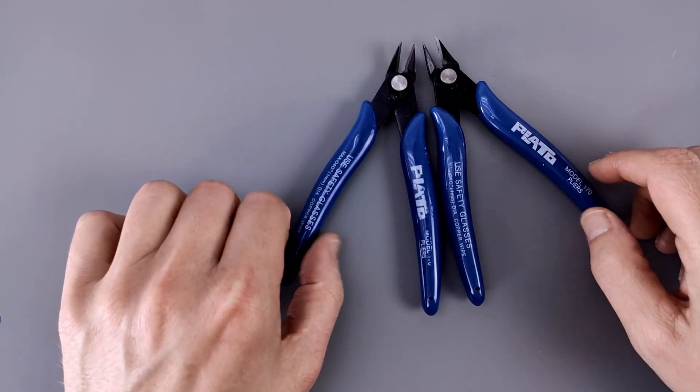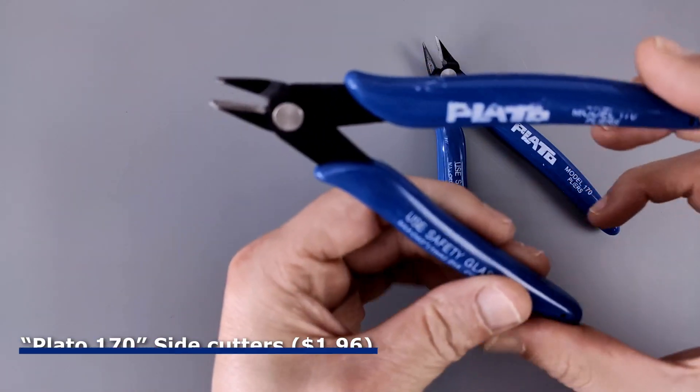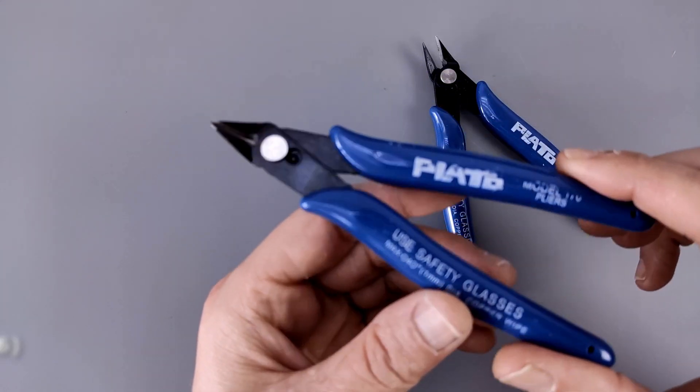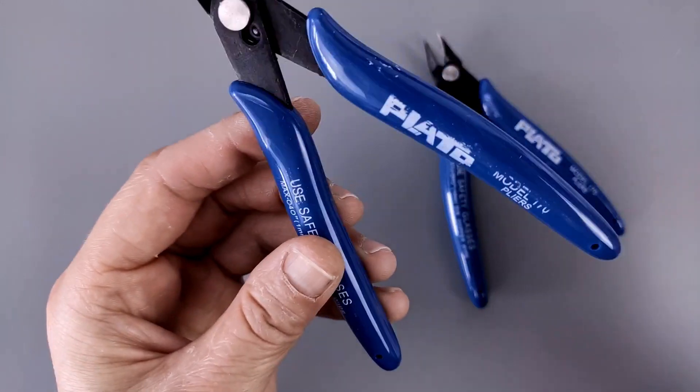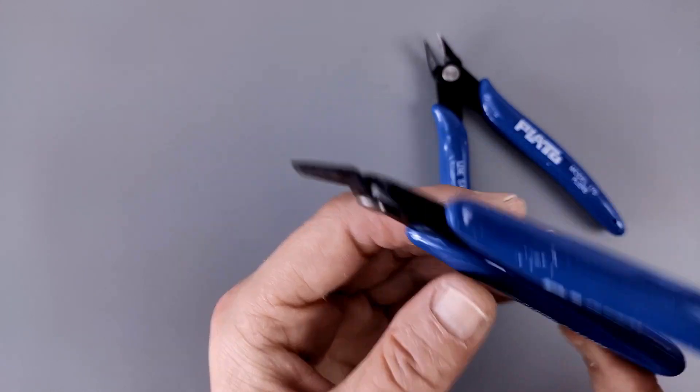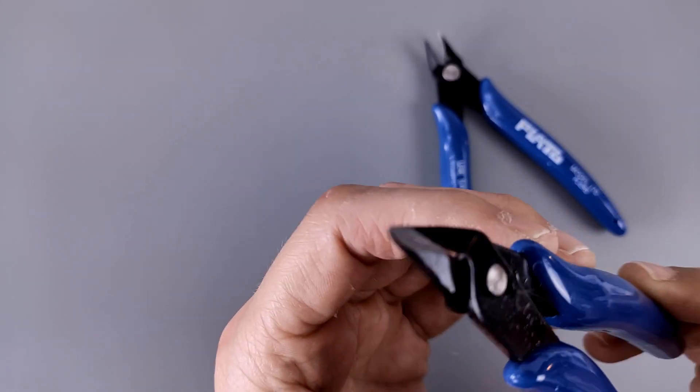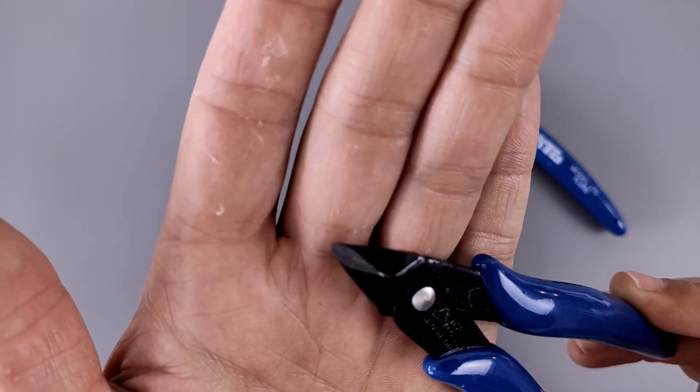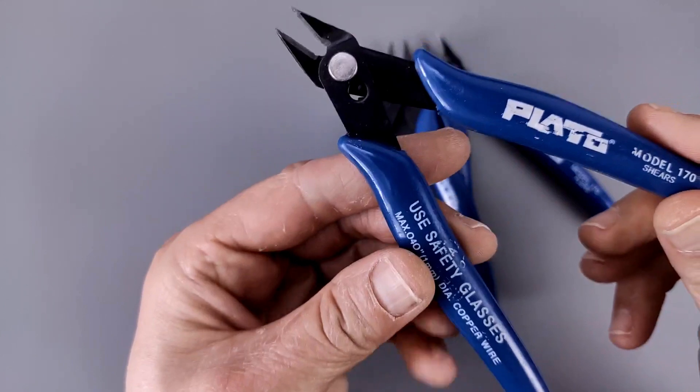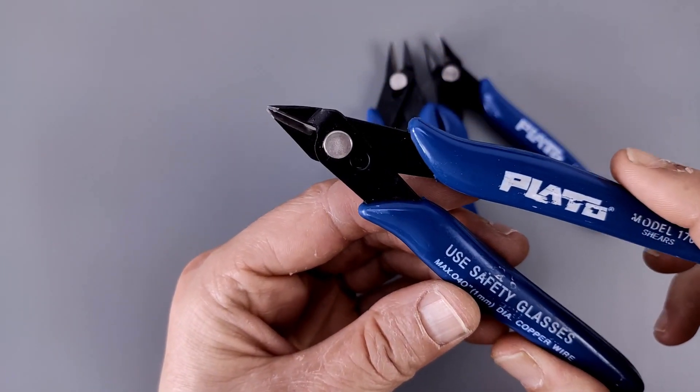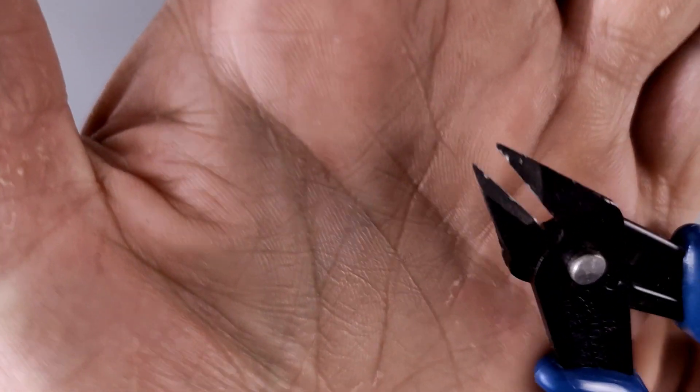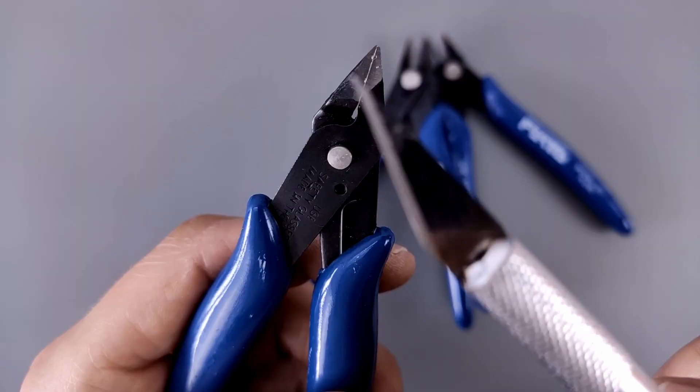These are Plato, probably copies, definitely copies, one seven zero pliers, model 170 pliers. These are side or flush cutters. Let me grab my old one which are these. I really like them, they cut just fine and make really nice cuts.